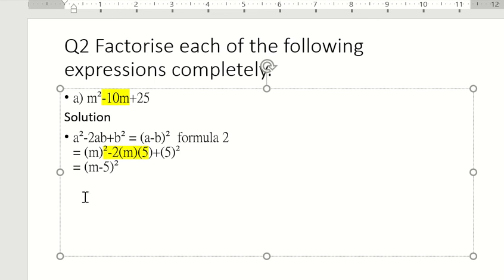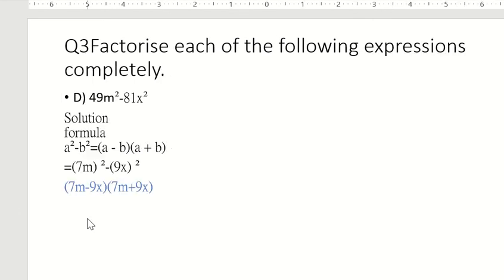Now, we are going to question number 3: a square minus b square formula, that is a minus b and a plus b. Very easy and very simple and short. 49 is the square of 7, 7m. 81 is the square of 9, 9x. First time this is minus sign here and then this value is plus sign here. It is a very easy formula that all kids remember quickly. I hope you also remember this formula.